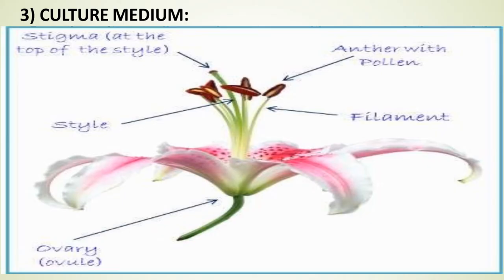Culture medium: anther and pollen culture medium requirements vary with the genotype and age of the anther, as well as the conditions under which donor plants are grown. Incorporation of activated charcoal into the medium has stimulated the induction of androgenesis. Iron in the medium plays a very important role for the induction of haploids. Potato extract, coconut milk, and growth regulators like auxin and cytokinin are also used for anther and pollen culture.